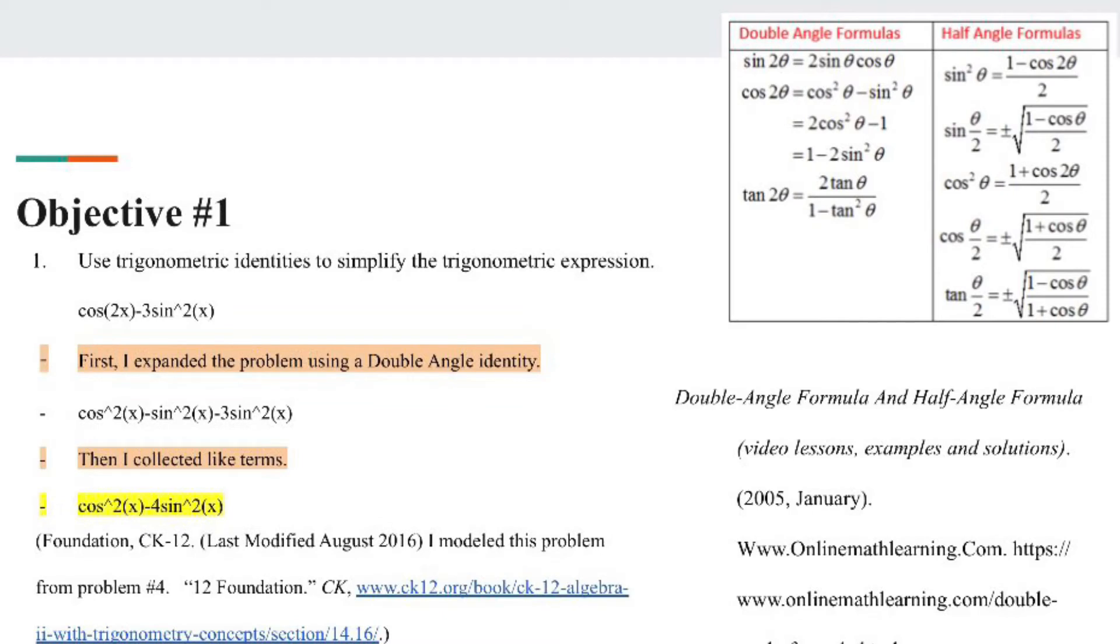First, we'll start with objective number one, which asks us to use trigonometric identities to simplify a trigonometric expression. I chose the problem from ck12.org.